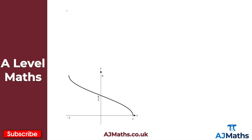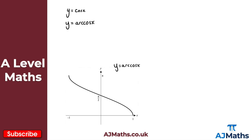Moving on to our next trig function and its respective inverse — we have y equals cosine x, and the inverse is represented as y equals arc cos x. Below is a sketch of y equals arc cos x. From our sketch we can deduce a few important points: it intersects the y-axis at pi over two.